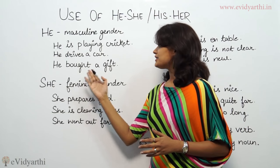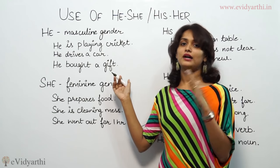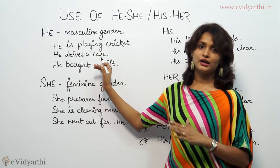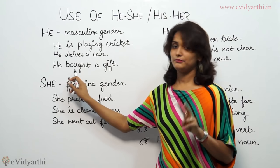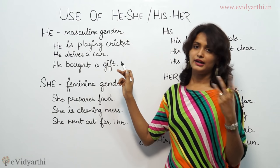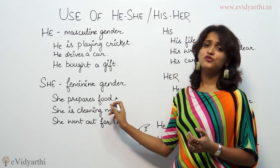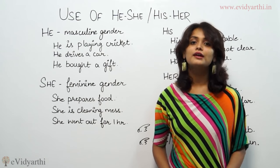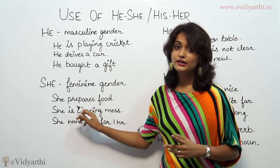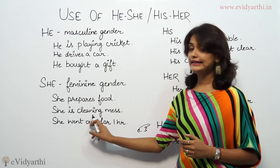'He bought a gift' — in any tense, whether past or present, he and she are followed by a verb. 'Bought' is the second form of 'buy.' He bought a gift. Now look at she: 'She prepares food' — here 'prepares' is the action or main verb. 'She is cleaning the mess' — here 'is' is the auxiliary verb immediately after she.